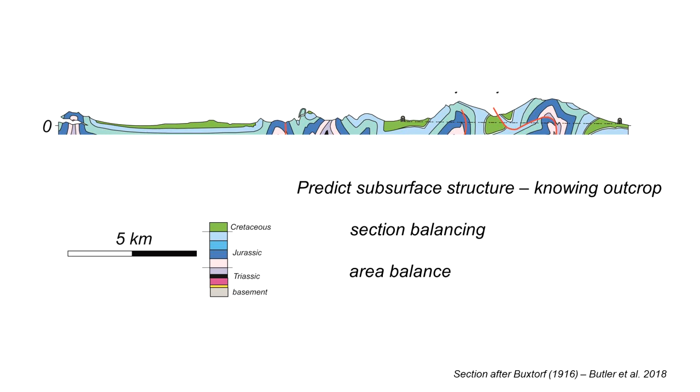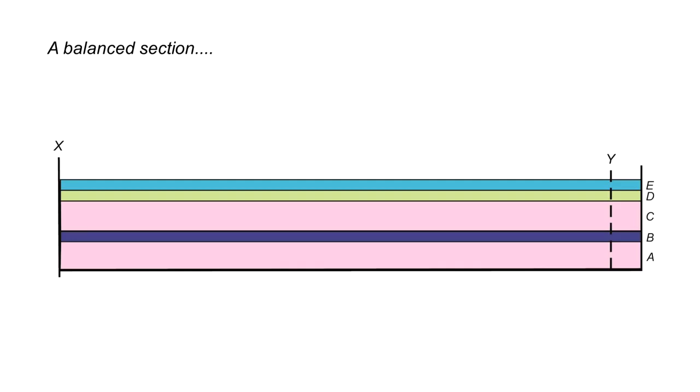Let's set the scene by looking at what we mean by section balancing. Here we have some strata, they are originally constant thickness in this particular demonstration, one on top of the other from A oldest up to E youngest, and I've put a couple of markers across this profile, one on the left X and one on the right Y.